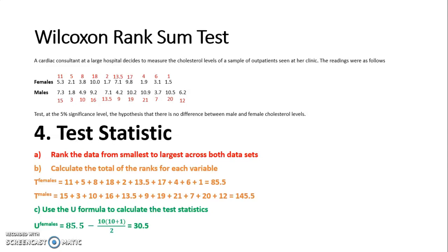I do the same for males using 145.5 as the t value. There are 11 male data points, so 11 bracket 11 plus 1 over 2, which gives me 79.5. Just like we've done with many distribution free tests, the test statistic is the smallest of those two values. So 30.5 is my test statistic.